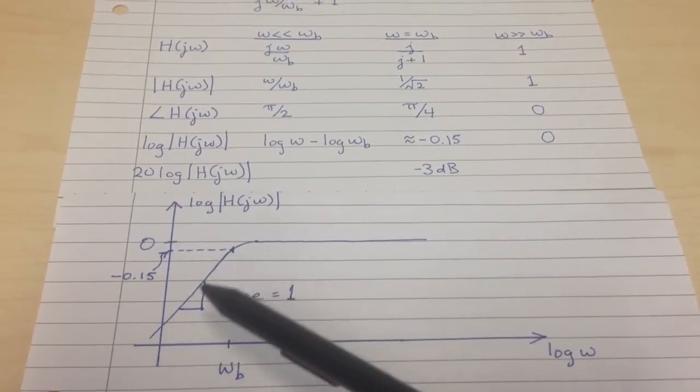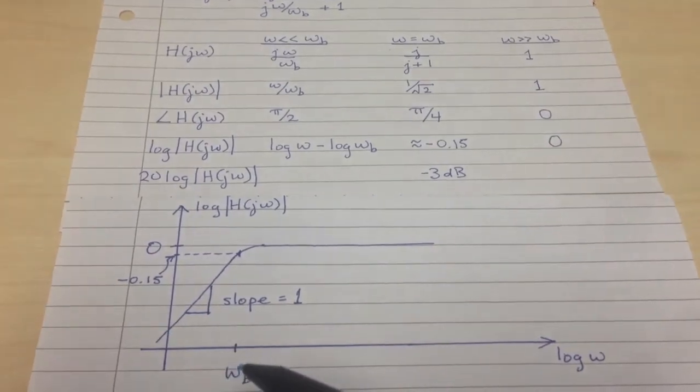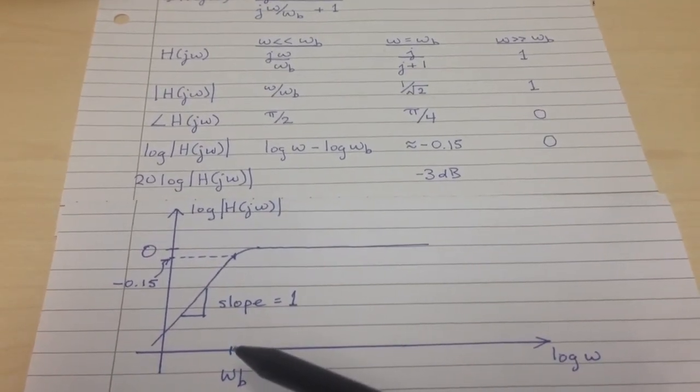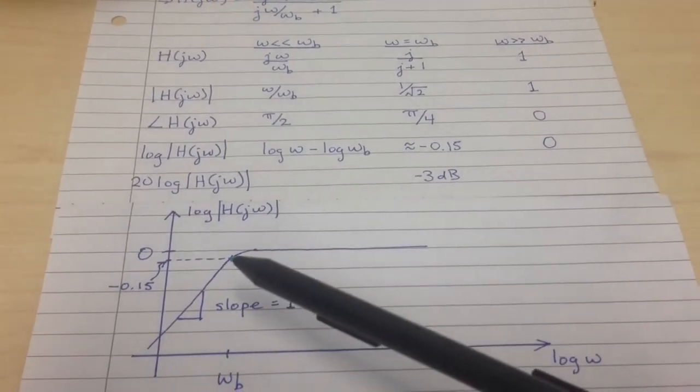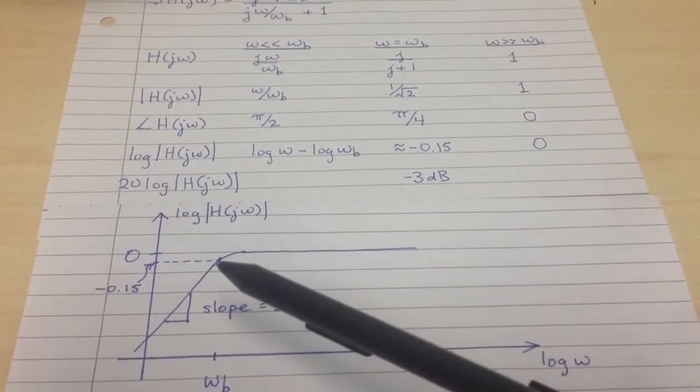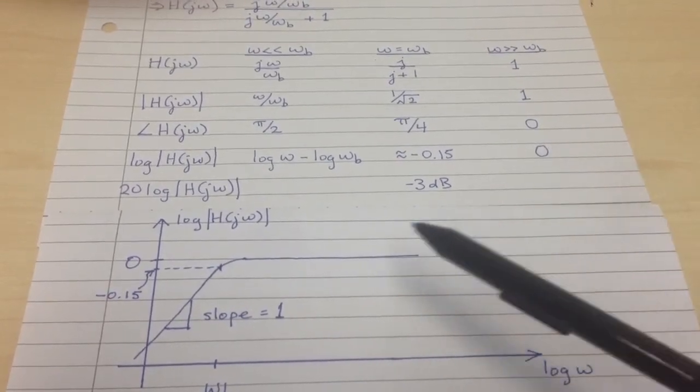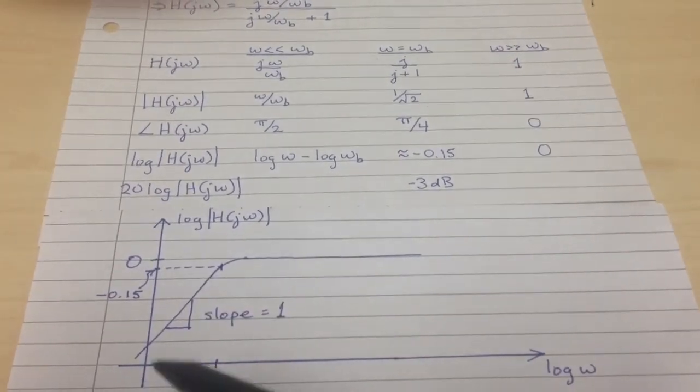In the low frequency limit, it has a slope of 1, some intercept that we're not going to worry about. At omega B, it has a value of minus 0.15, or 3 dB if you want to multiply by 20. At high frequencies, it has a value of 0. You notice 0 is not down here, it's up here.